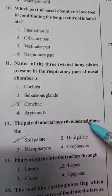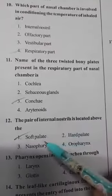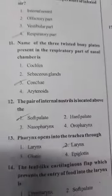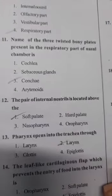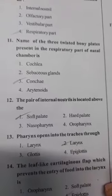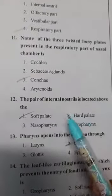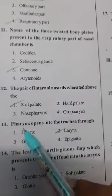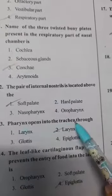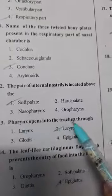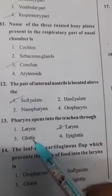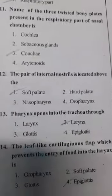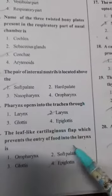The pair of internal nostrils is located above the soft palate. The pharynx opens into the larynx through the glottis — so the correct answer is glottis.